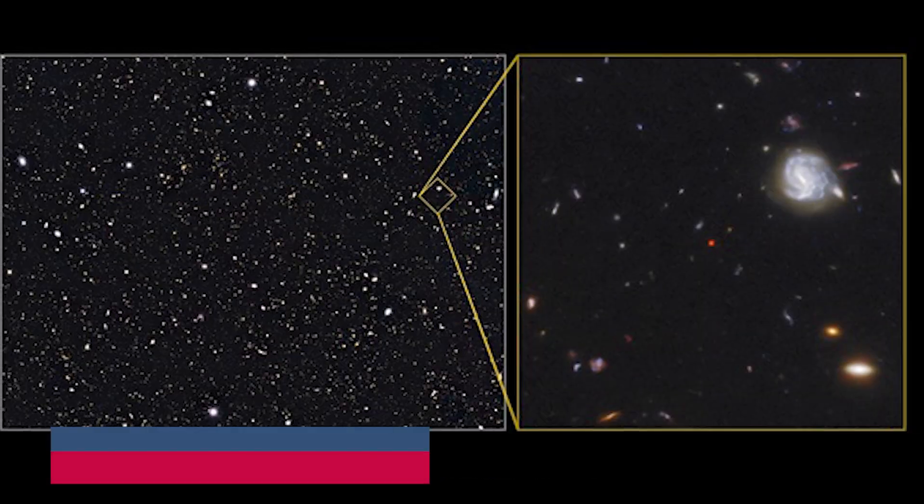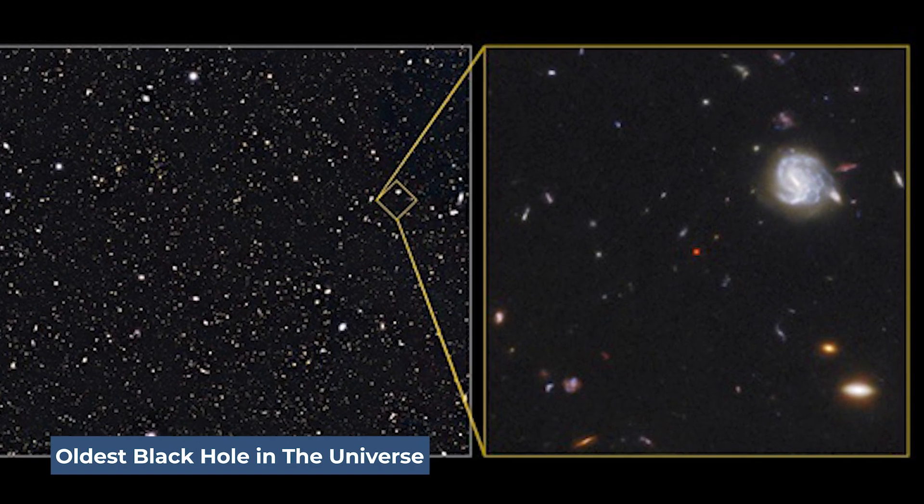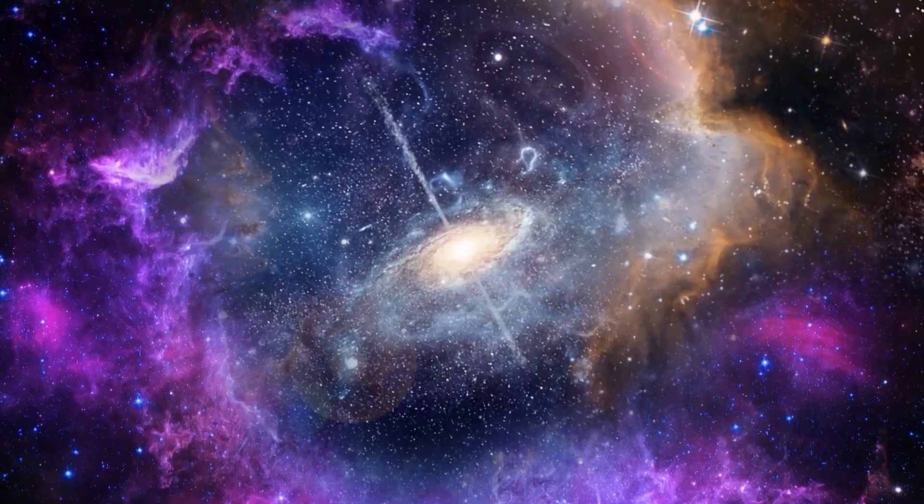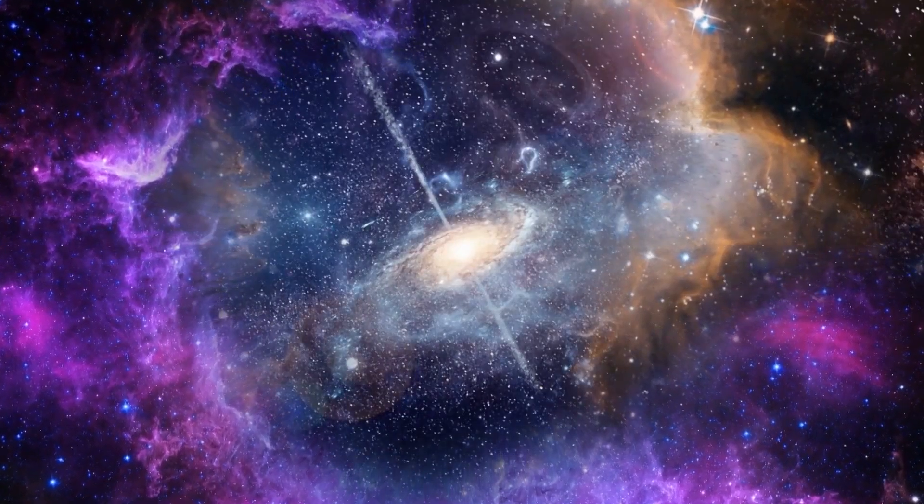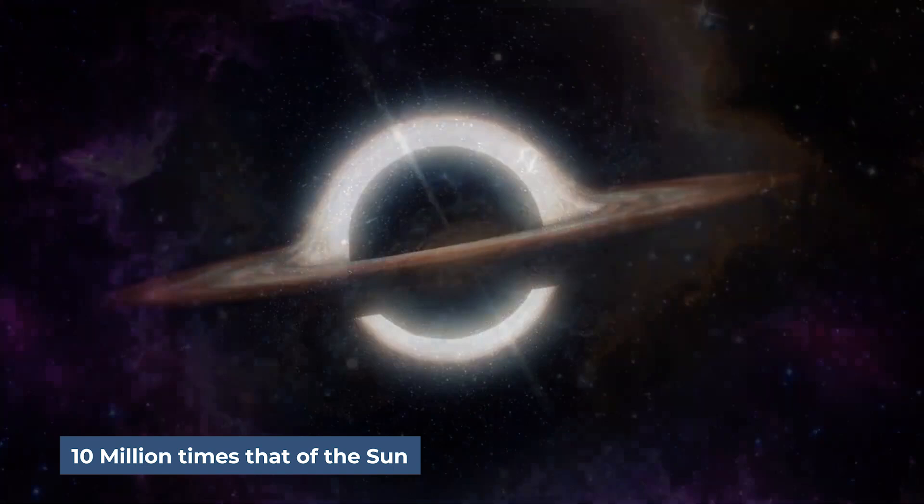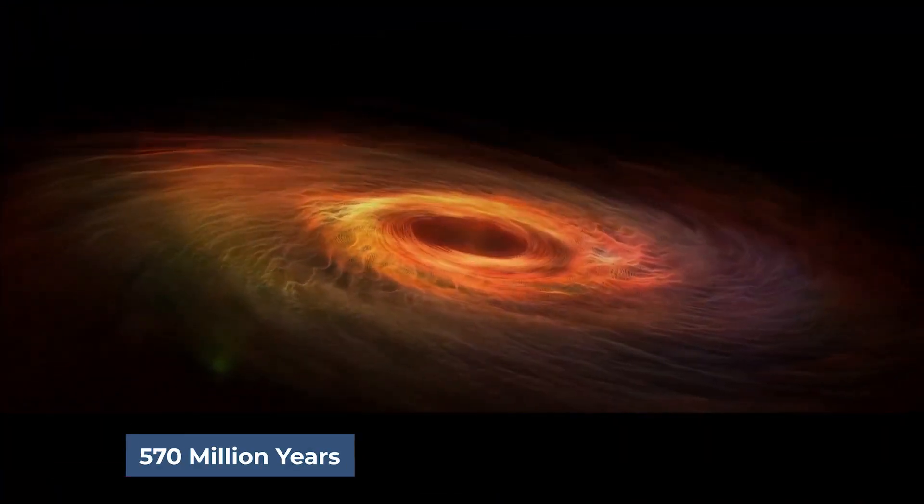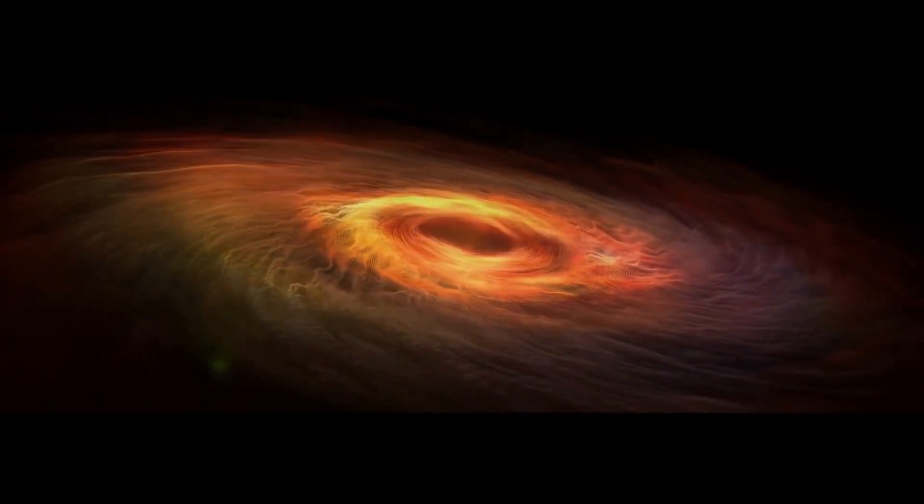JWST spotted the oldest black hole in the universe, and scientists think even older ones could be swarming our young cosmos. The supermassive black hole JWST discovered has a mass of 10 million times that of the Sun. It was found in the middle of a baby galaxy 570 million years after the universe began.